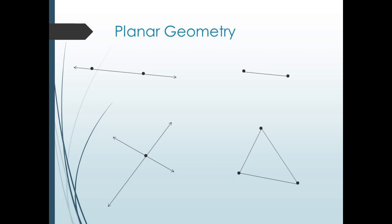We can start by thinking back to plane geometry. Given two points, there was exactly one line going between them, and the shortest distance between these points was the segment of the line joining them. We could intersect two non-parallel lines in a single point, and given three non-colinear points, the line segments joining them formed a planar triangle.